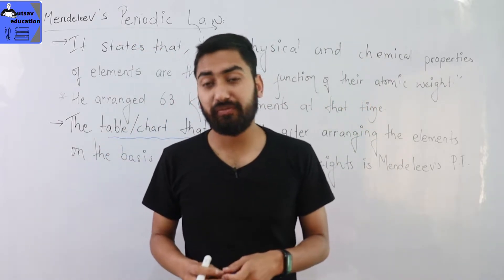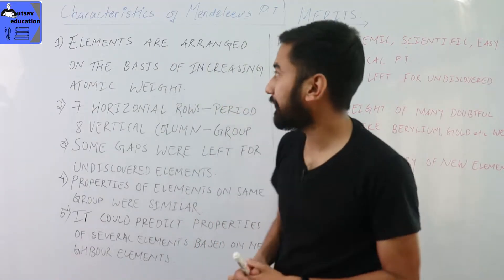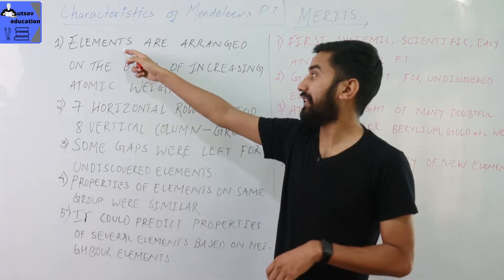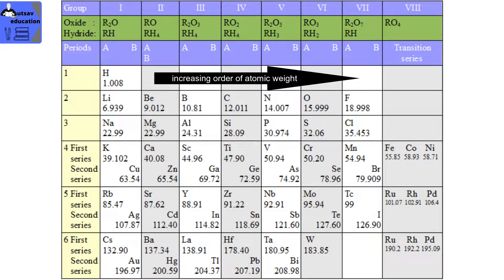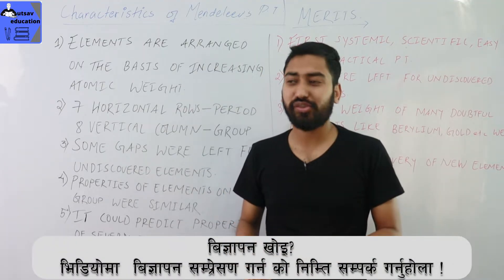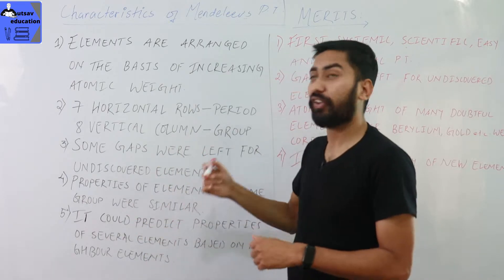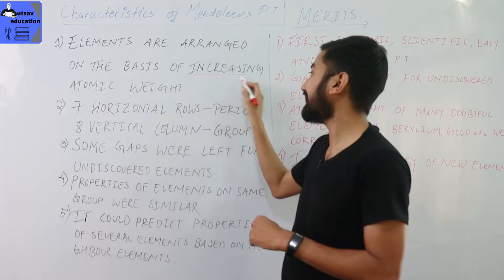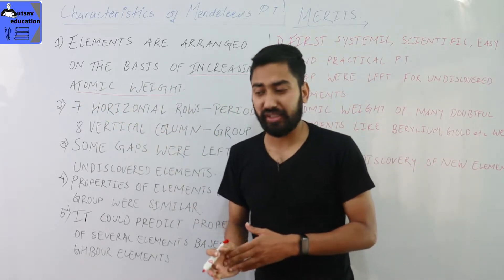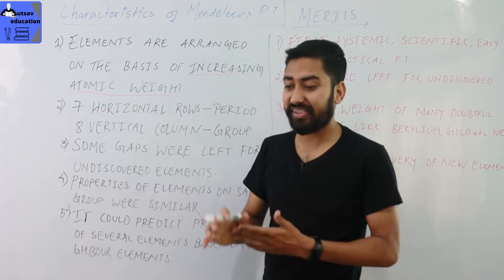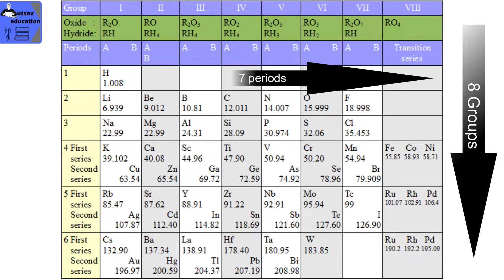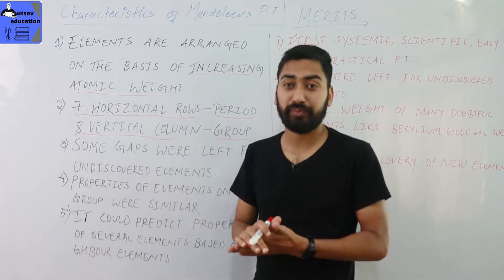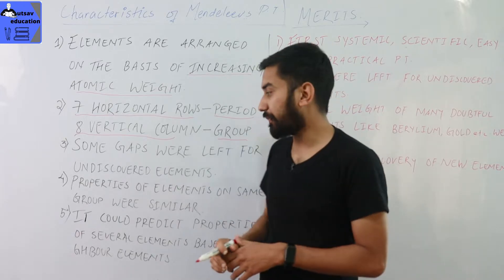What are the characteristics of the Mendeleev's Periodic Table? The first characteristic is that elements are arranged on the basis of increasing atomic weight — elements are arranged in increasing order of atomic weight. It contains seven horizontal rows, called periods, and vertical columns, called groups.